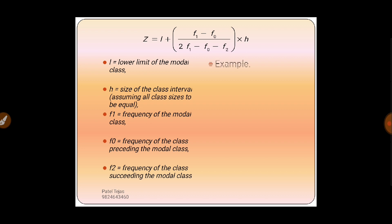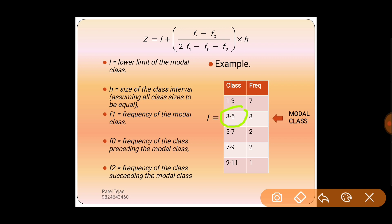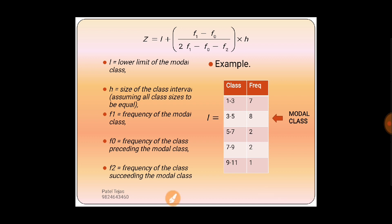Let's clarify further with a table of class and frequency. First we decide the modal class — the largest frequency is 8, so that becomes our modal class. Now for l: l is the lower limit of the modal class. Our modal class is 3–5, so its lower limit is 3, therefore l = 3. For h, the difference between classes is 2, so h = 2.